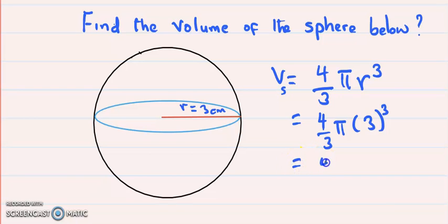This will give me 4/3 multiplied by π multiplied by 3³, which means 3 times 3 times 3. We are not forgetting the unit, so that is 3 cm multiplied by 3 cm multiplied by 3 cm.